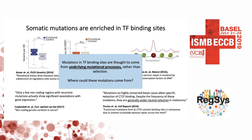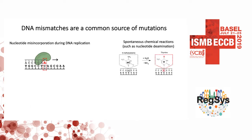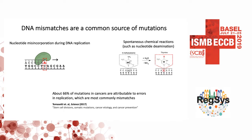One of the questions that we're interested in is where could these mutations come from. Mismatches are a common source of mutations. DNA mismatches are basically non-complementary base pairs — so an A with a C, or a T paired with a G — that arise during aberrant DNA processes, such as replication errors, or in the case of the TG mismatch, just spontaneous deamination. Over 66% of cancer mutations are actually attributed to errors in replication.